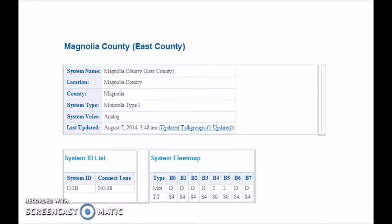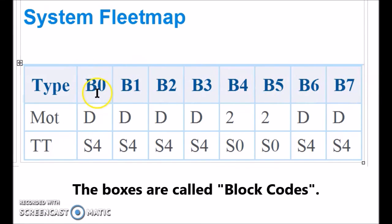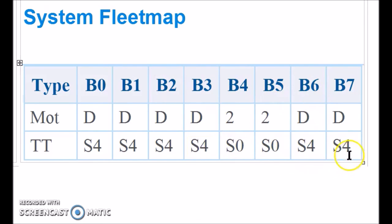The process of inputting the fleet map information isn't that difficult. You're simply looking at eight boxes — the same eight boxes you see when you click the fleet map in the scanner software. You come down to the TT line. For example, you take the four and move it to be a zero, the four to be a one, four, four, the zero to be four, the zero to be five, four, and four. That's the whole process, and you do it in the scanner software.